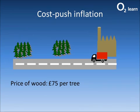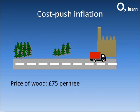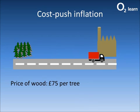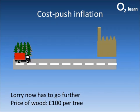We're going to see here a lovely set of trees and a furniture factory. At the moment the price of wood is £75 per tree. It looks like there's not much of that forest left. The lorry now has to go further, so the price of wood has gone up to £100 per tree. And that's what we like to call cost push inflation.